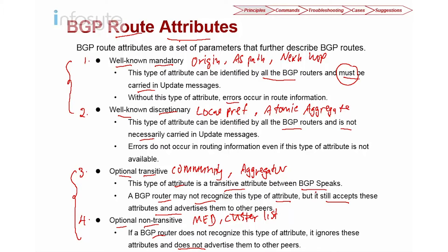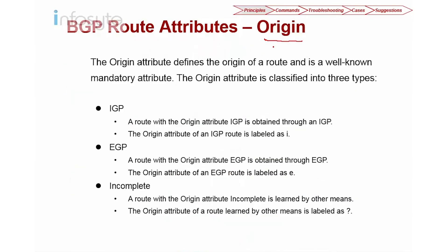Now let's look at the well-known mandatory attribute origin in detail. Origin informs all autonomous systems how the prefix was introduced into BGP. There are three ways: IGP, EGP, and incomplete. The IGP value is set when using the network statement in BGP. A route with origin IGP has origin attribute 'I'. When you do a display BGP route, if the origin shows 'I', it means IGP.